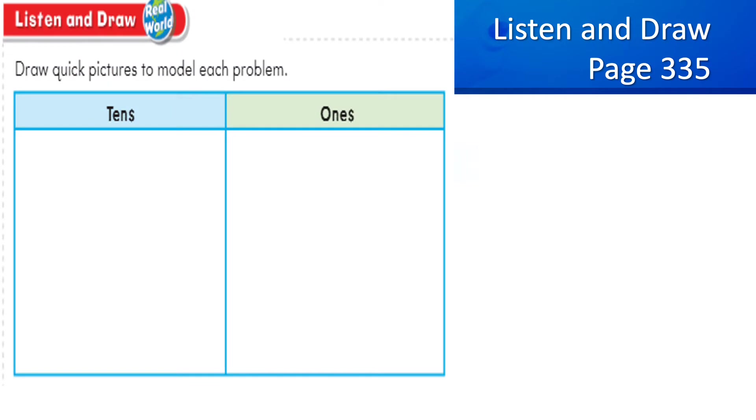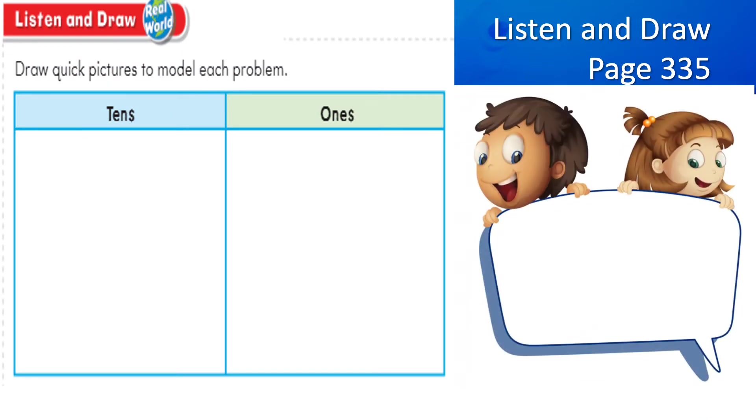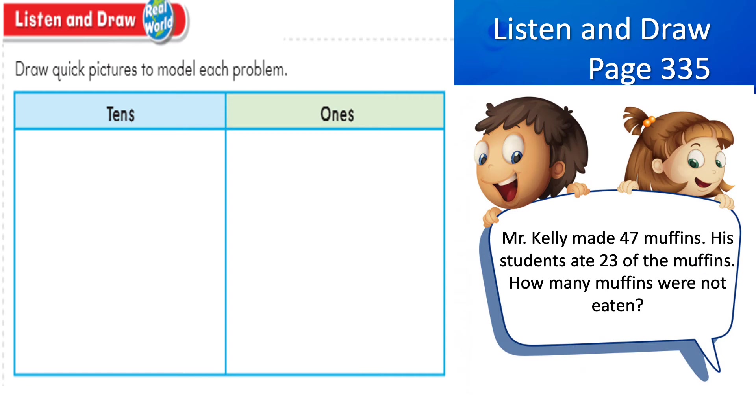You will now open page number 335 and we will solve Listen and Draw. Let's look at the question. Mr. Kelly made 47 muffins. His students ate 23 of the muffins. How many muffins were not eaten? So let's find out. In the number 47, how many tens are there? We will draw quick pictures to model each problem. So 47 has 4 tens. Very good. And how many ones children? It has 7 ones. Bravo!